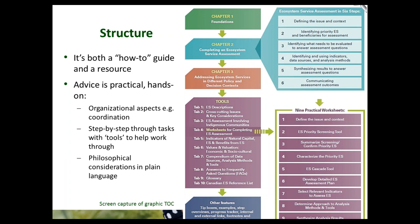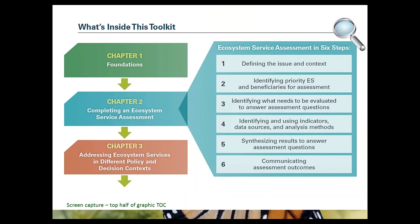On the left side of the graphic there are three chapters and then a suite of 10 tool tabs with numerous features and a complete list of works cited. One of the major innovations in the toolkit is a set of nine practical worksheets, indicated in the lower right corner of the graphic. They are to be used in conjunction with the guidance in Chapter 2, which lays out six steps shown in the blue box on the top right of the graphic.